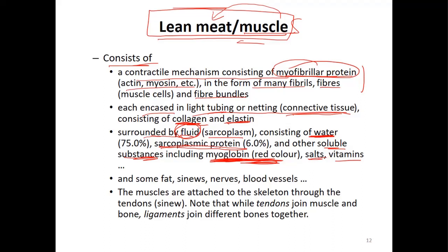In the sarcoplasm we have fat, we have sinews, tendons, nerves, blood vessels, and so on. The muscles are attached to the skeleton - skeleton means the bone - attached to the bone through tendons.